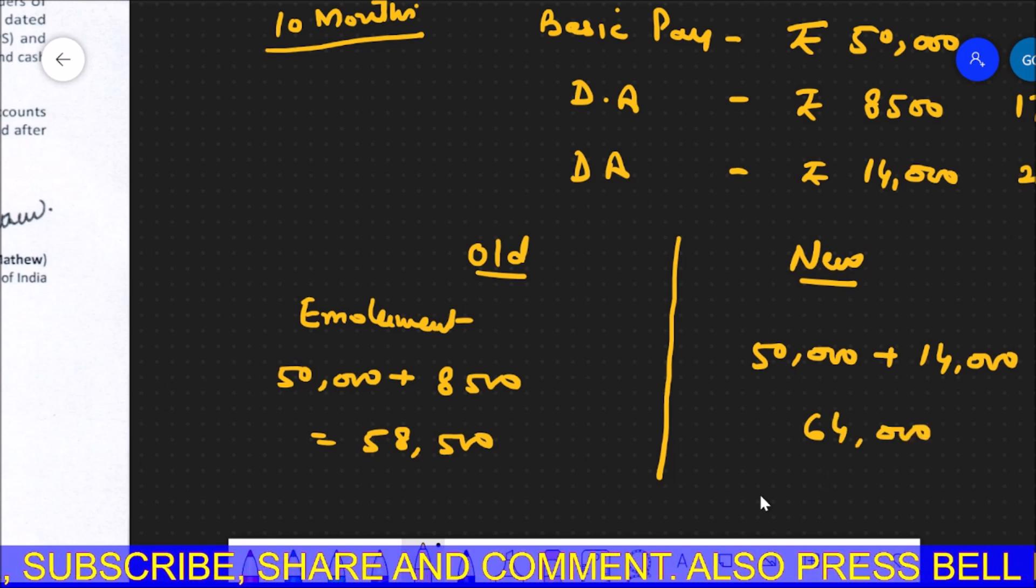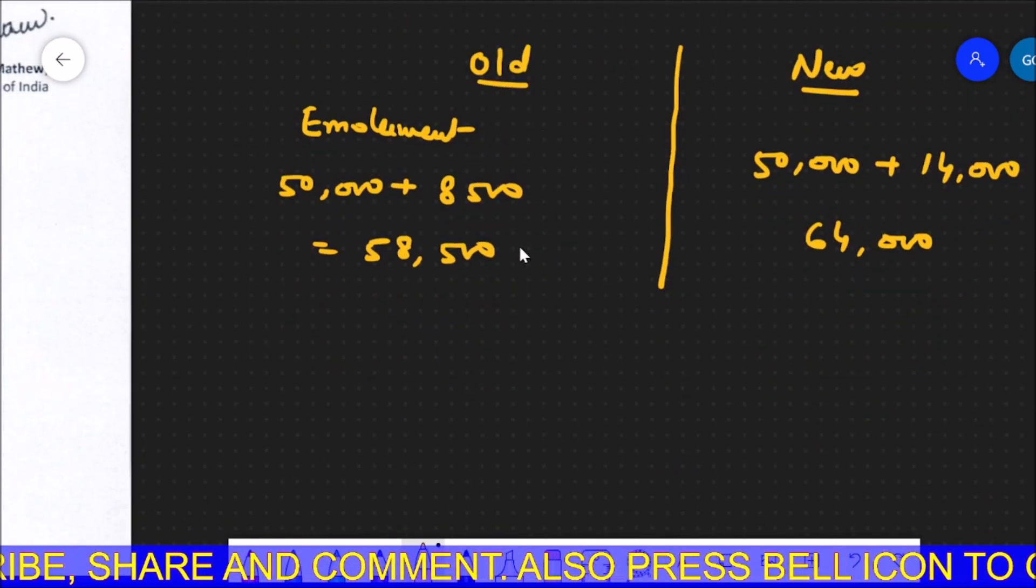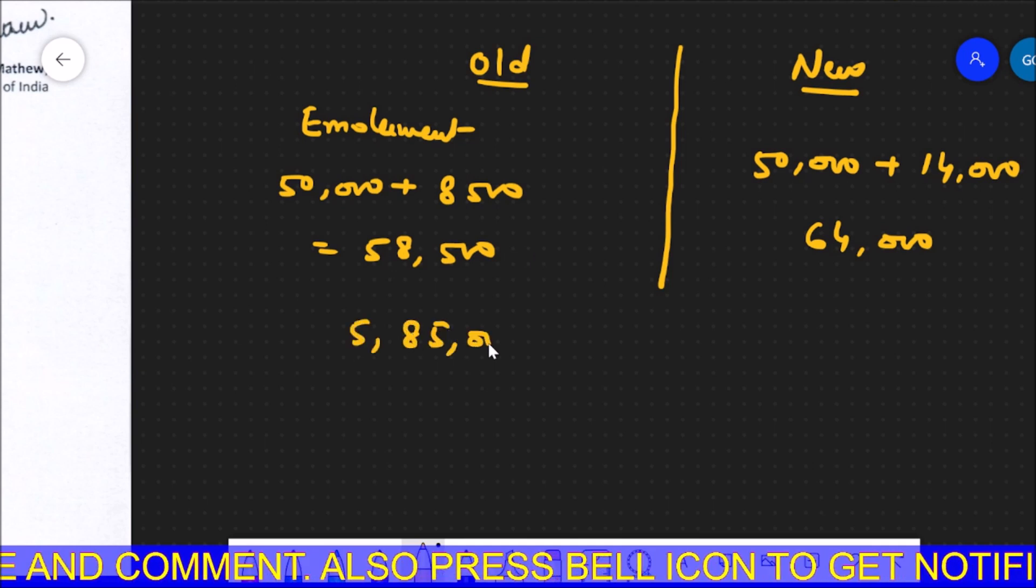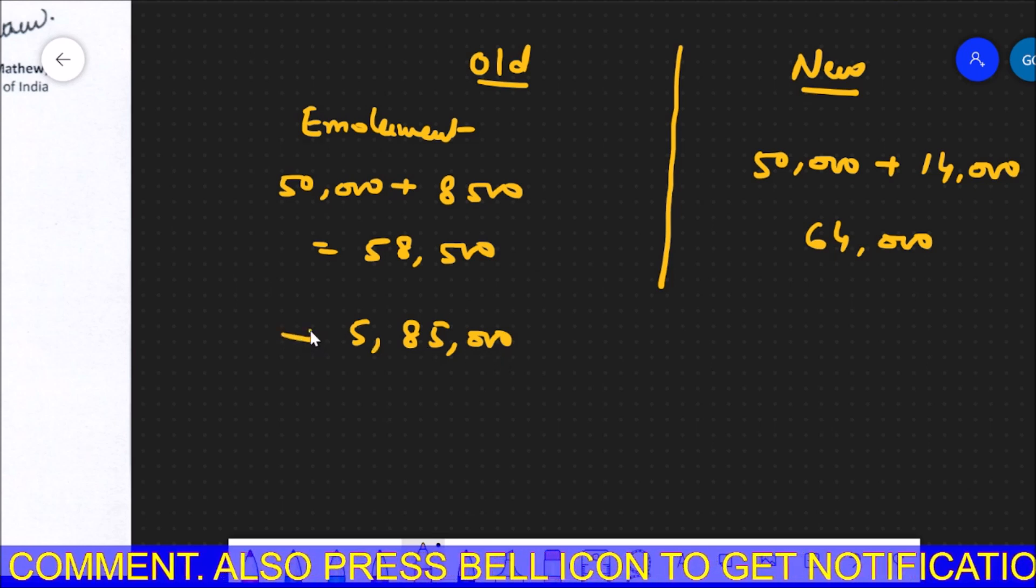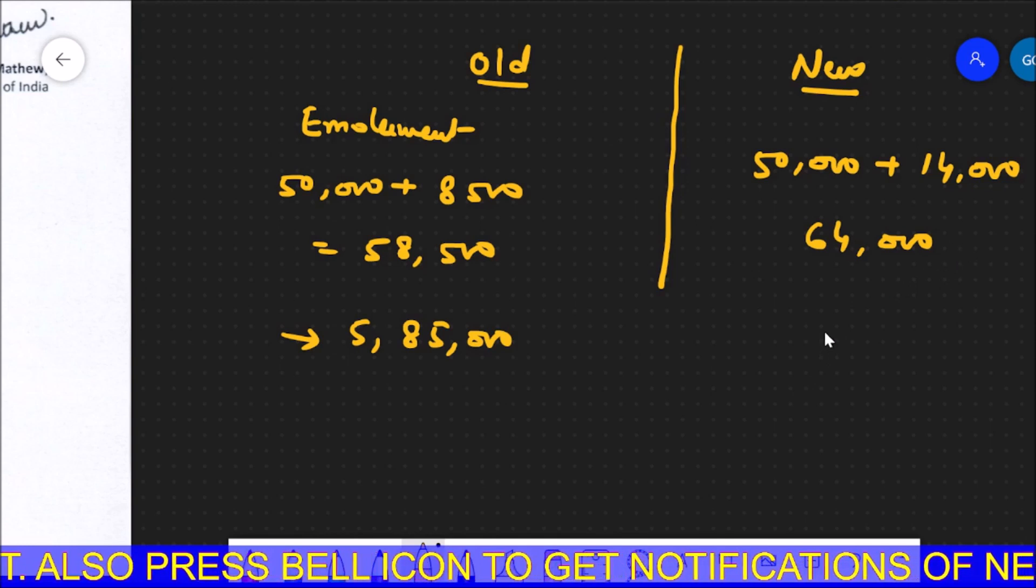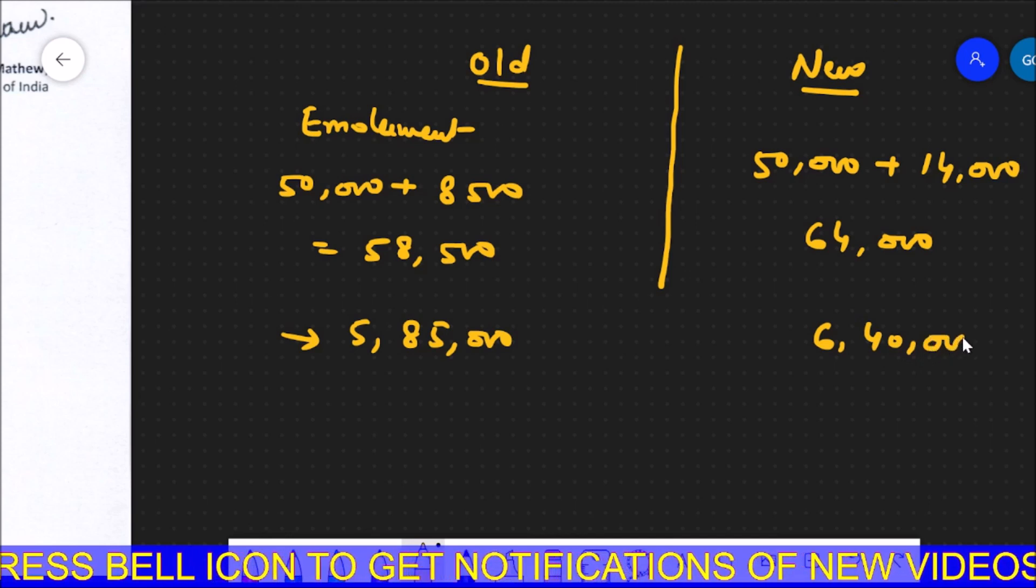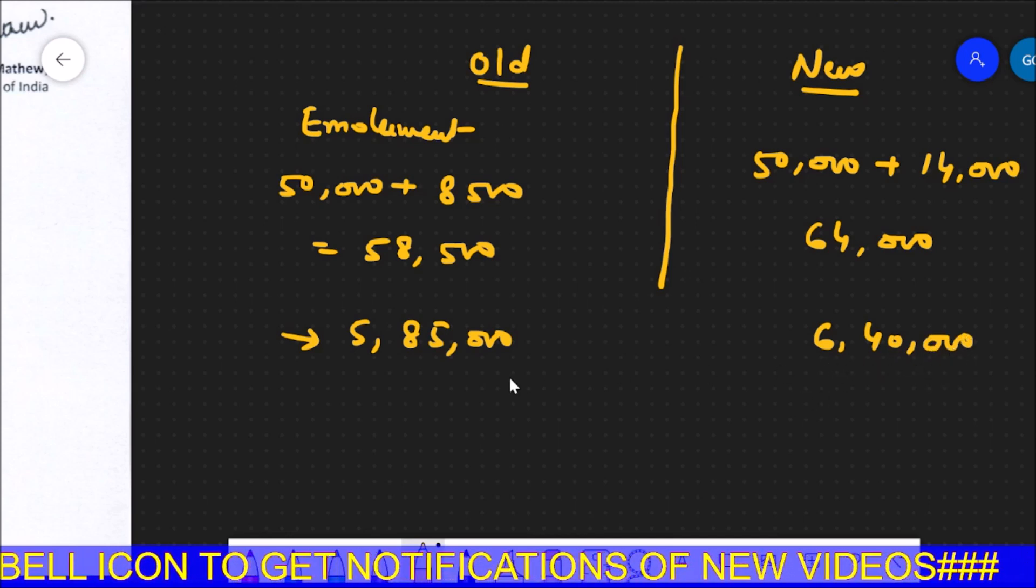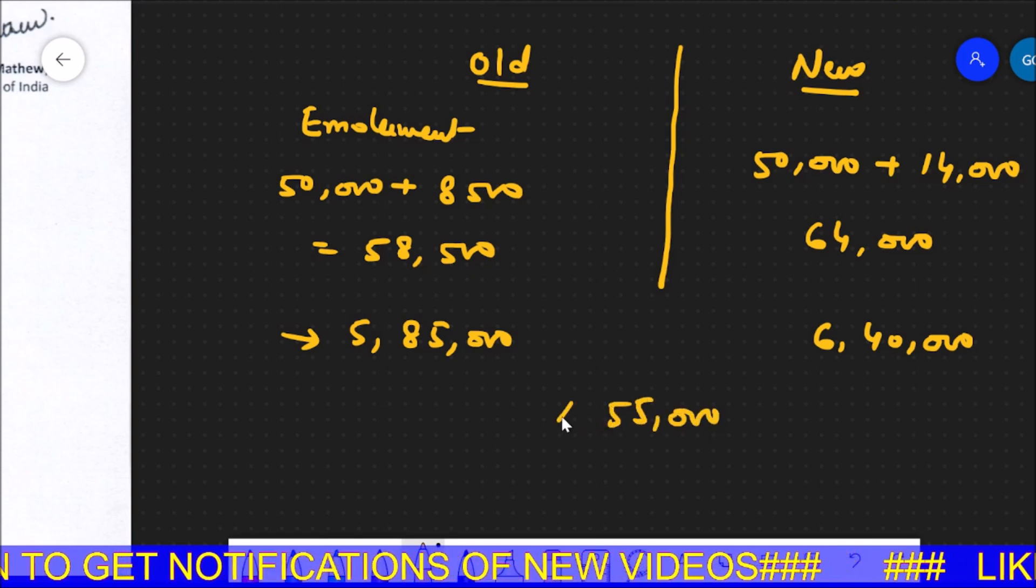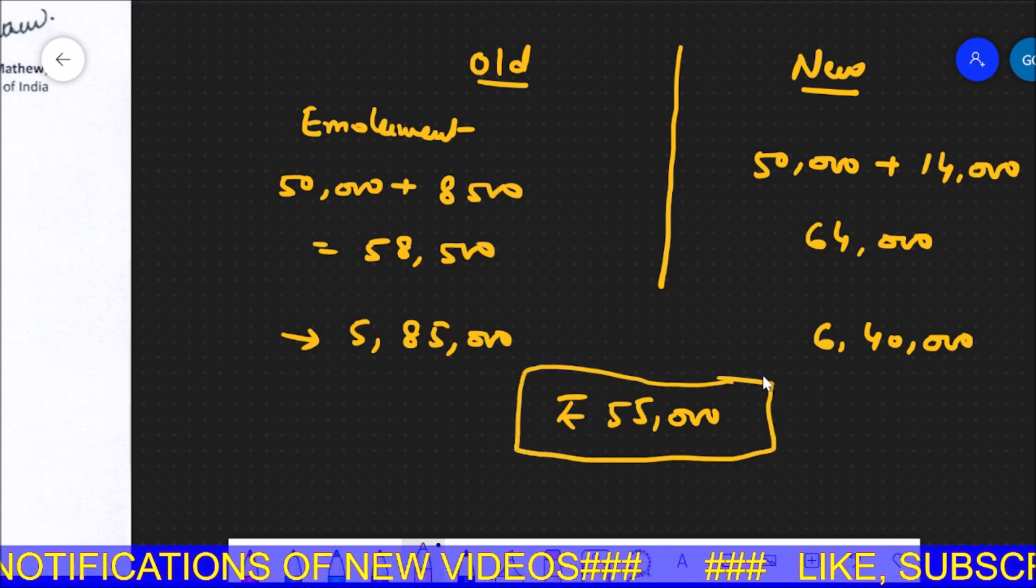So if this is one month, if I make 10 months, just add zero. What will happen? Rs. 5,85,000. But how much is needed? Rs. 6,40,000. So you can see you will get Rs. 55,000 extra.